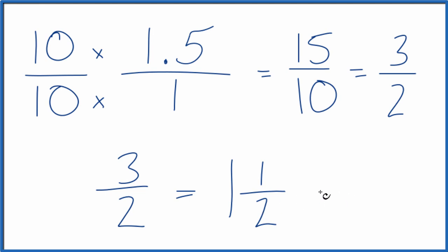This is Dr. B converting the decimal 1.5 to an improper fraction. That's 3 over 2, and a mixed number, 1 and 1 half. Thanks for watching.